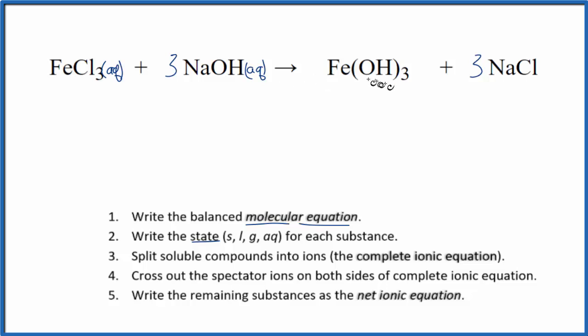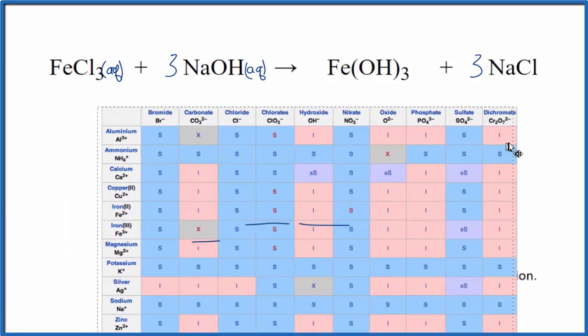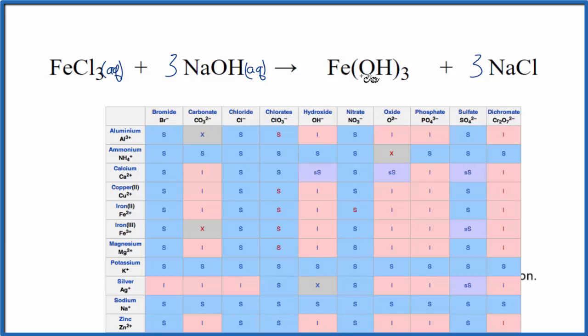On the product side, this iron-3-hydroxide—hydroxides are sometimes quite often insoluble. So I want to look that up on a solubility table just to make sure. I can see I have this iron-3 here and then a hydroxide. So I go down and across and that I means it's insoluble. So this is going to be a precipitate at the bottom of the test tube. We're going to write an S for solid.